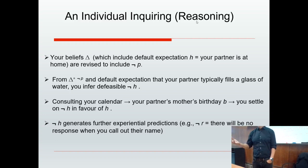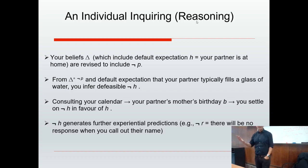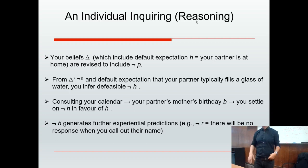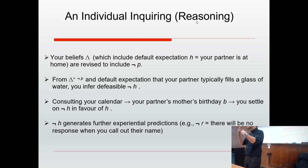Now your updated beliefs generate further experiential predictions — for example, there will be no response if you call out your partner's name. If there is no response, again we're using our sensory apparatus to confirm our beliefs. We start with sensory confirmation or disconfirmation of experiential predictions, then move to more system-two conscious inference — non-monotonic inference that generates more experiential predictions — and so on. This is the cycle.